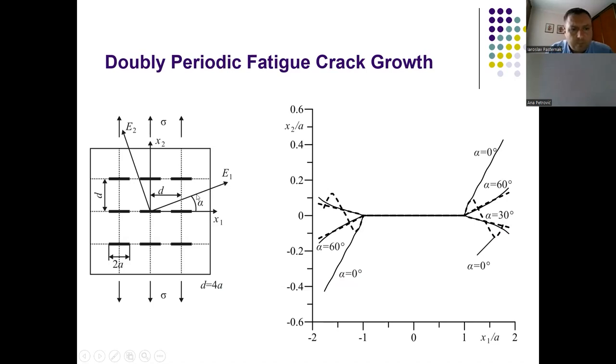When the orthotropy angle is zero, we can see that the crack starts to grow at an angle of approximately 70 degrees, and that growth is stable. That's why we can consider isotropic and orthotropic materials within this model of doubly periodic fatigue cracks.